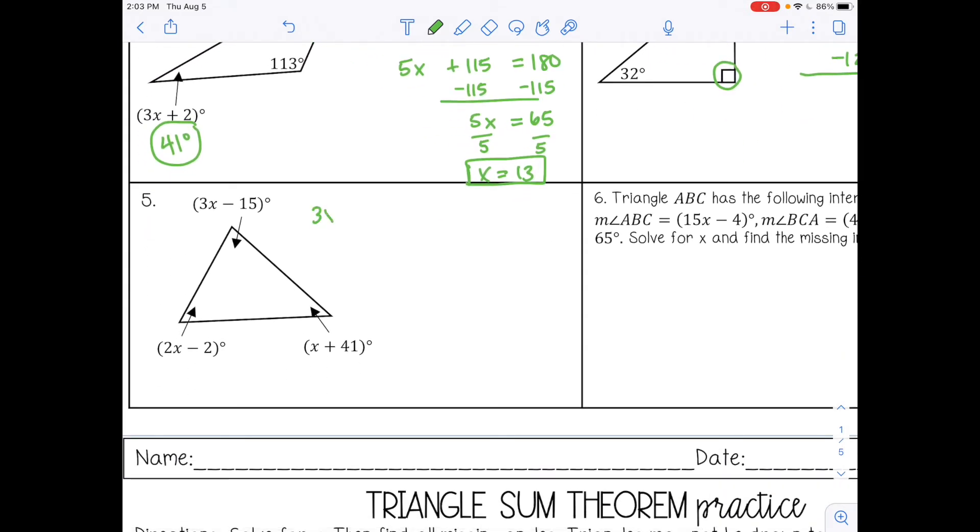Number 5. I'm going to list all of these expressions out. You can get rid of parentheses and the degree marks. Combine like terms. So 3X plus 2X plus X, that would be 6X. And then negative 15 minus 2 plus 41, that would be positive 24. And subtract 24 on both sides. Divide by 6. That would be 26.